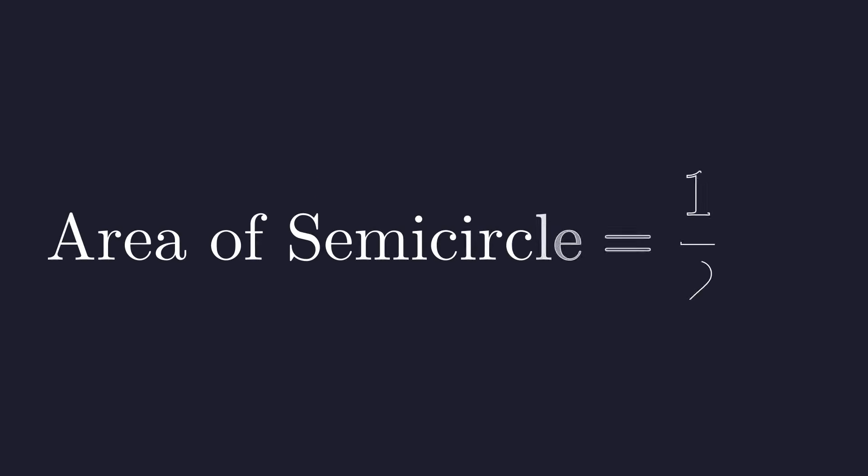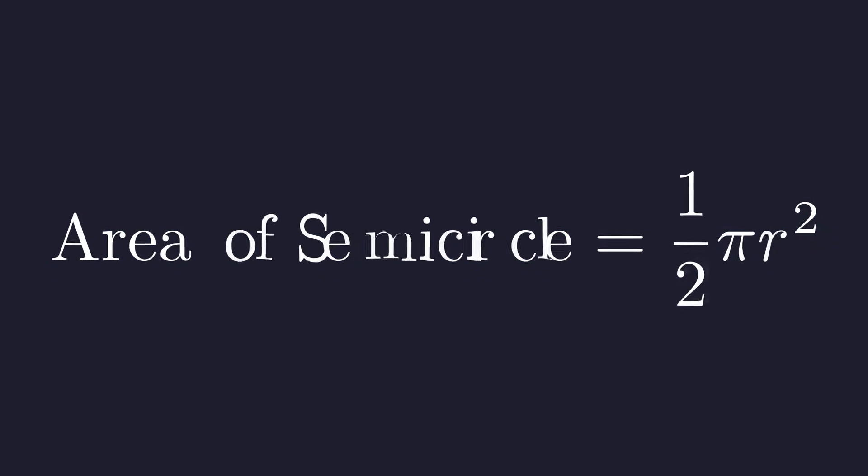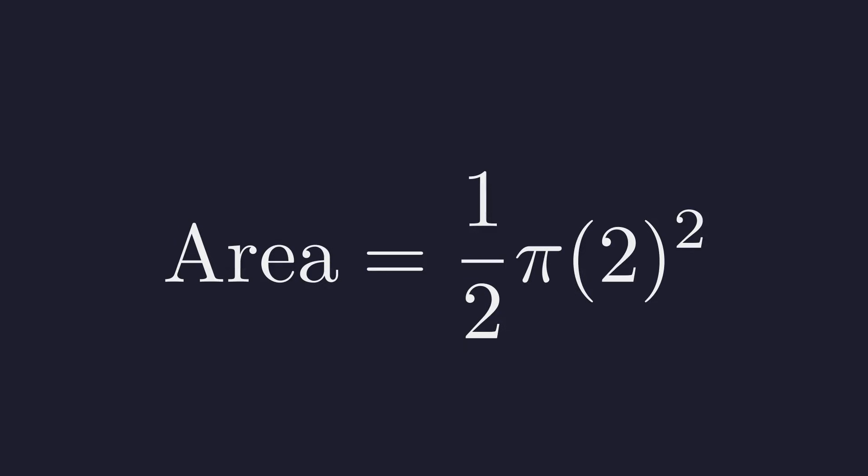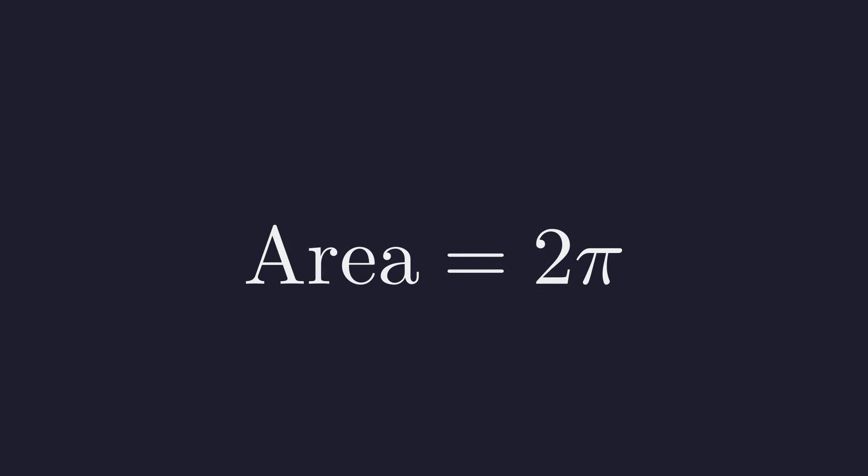The formula for the area of a semicircle is 1 half pi times the radius squared. We have already determined that our radius, r, is 2. Substituting r equals 2 into the formula. First, we evaluate the exponent. 2 squared is 4. This simplifies the calculation to 1 half of 4 pi. Finally, multiplying by 1 half gives us the result. The area is exactly 2 pi.